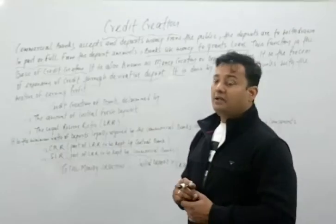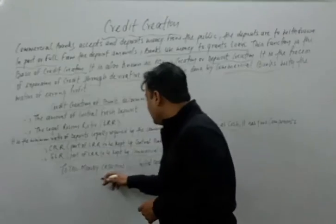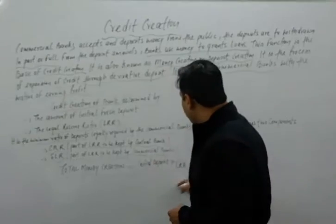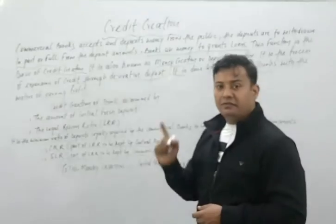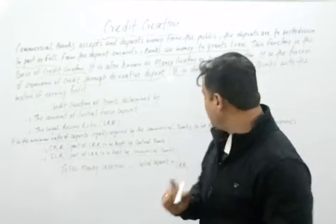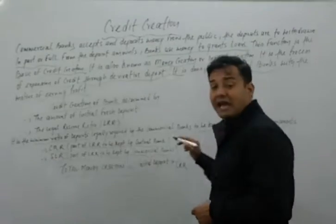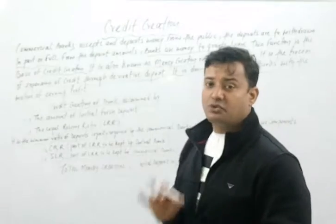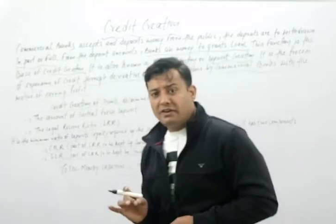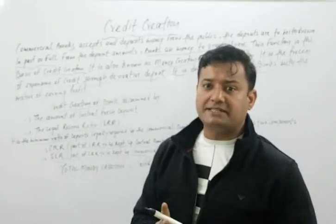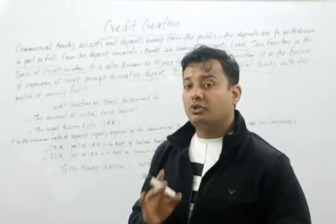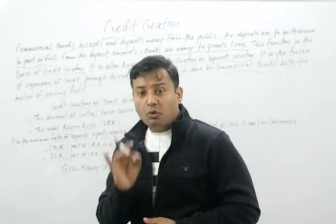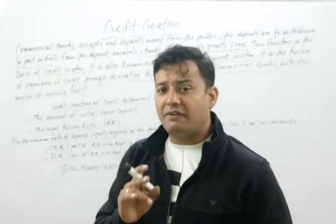Now, what is the total money creation? Total money creation equals the initial deposit multiplied by one divided by LRR — that is, initial deposit into 1/LRR, where LRR is the Legal Reserve Ratio. Those who like this video don't forget to subscribe the channel and share this video with others so they can also get the benefit.